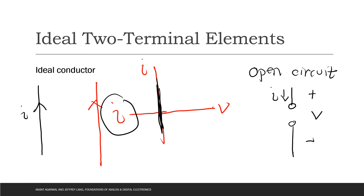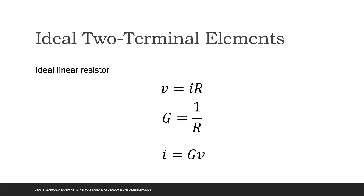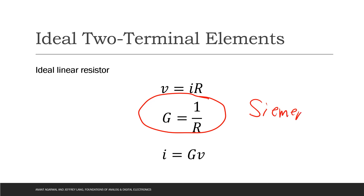An open circuit element can also be expressed on the V-I curve — it is the opposite of the ideal wire. We have different values of voltage for zero current, shown as a horizontal line on the V axis. For an ideal linear resistor that obeys Ohm's law for all values of voltage and current, we can also express the reciprocal resistance as conductance G, with units of Siemens. Thus, current I equals G times V.